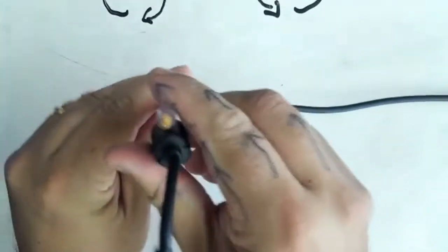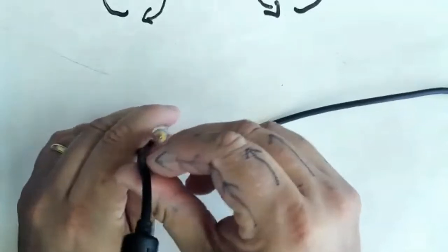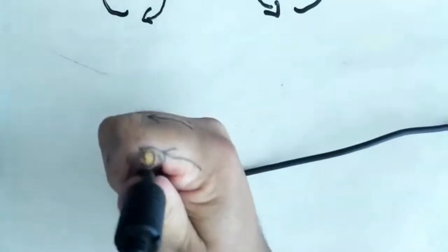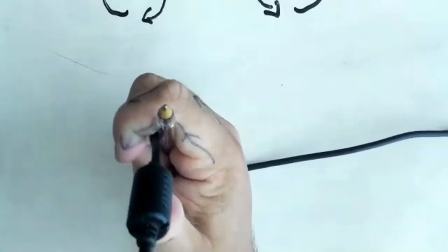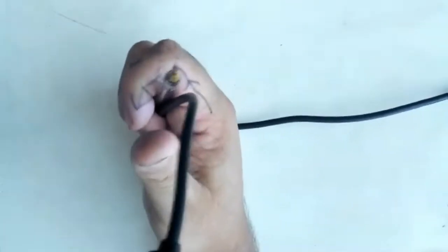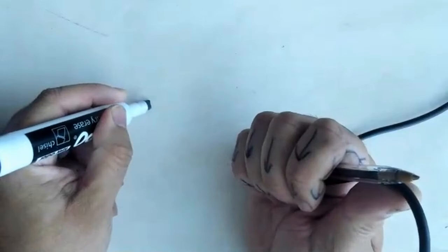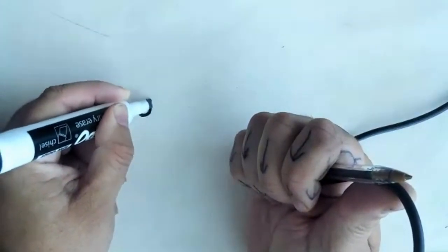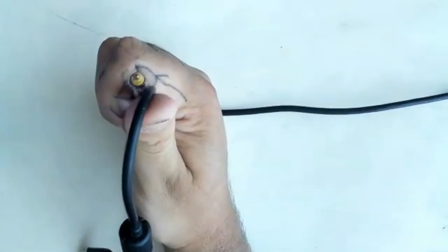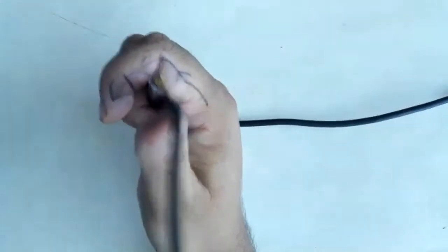Let's say the current in this wire is coming out of the screen. To figure out which direction the magnetic field is going, you put your thumb pointed in the direction the current's flowing and wrap your fingers around it. The arrows on my fingers show the magnetic field is going in a counterclockwise way. To draw this, you make a small circle — the dot inside means something is coming out of the page toward your eyes. So when the current comes out like this, the magnetic field goes counterclockwise.